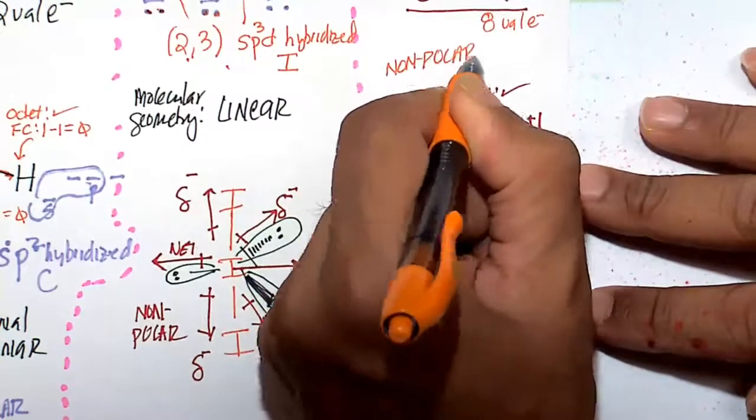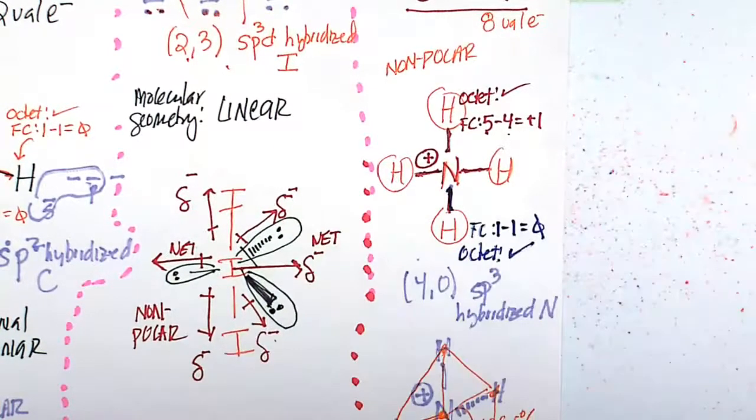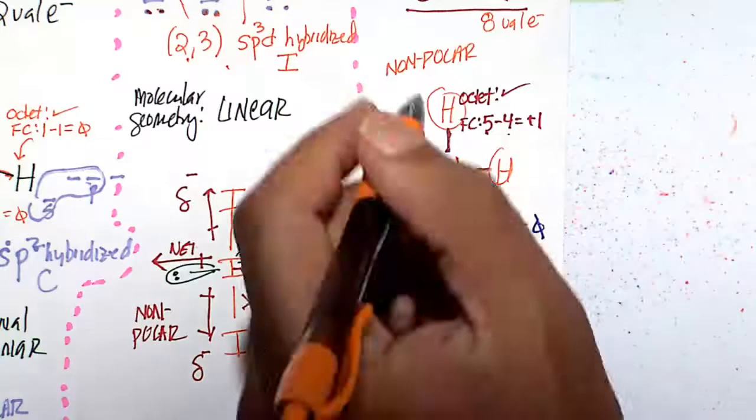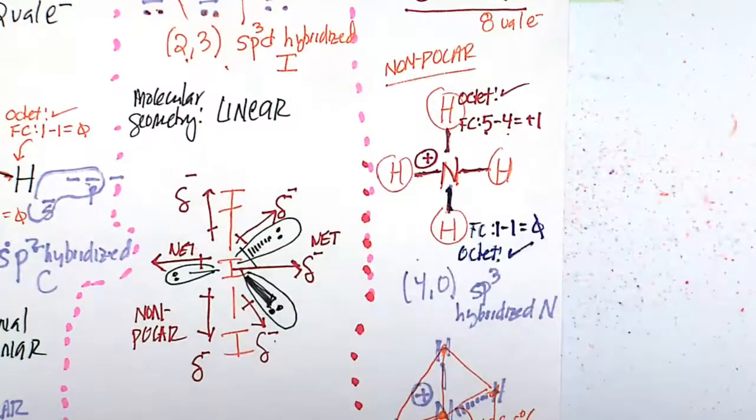Though you can make the argument that the positive charge of the nitrogen is partial, it's a full positive charge. So there is some charge to the molecule, but it's not like partial positive here, partial negative there. No. This is a non-polar molecule.